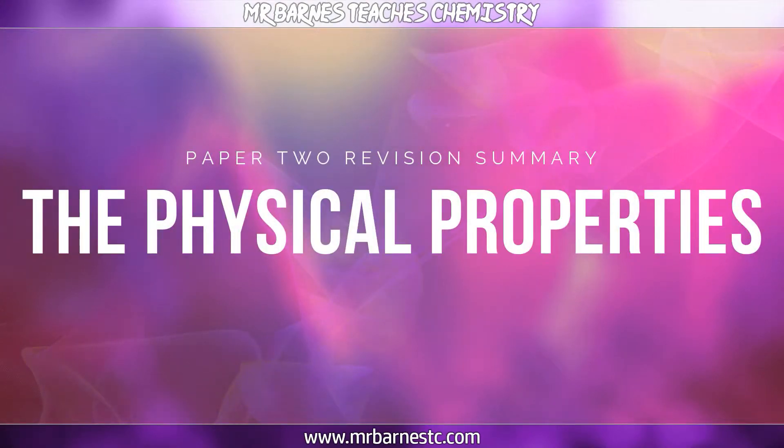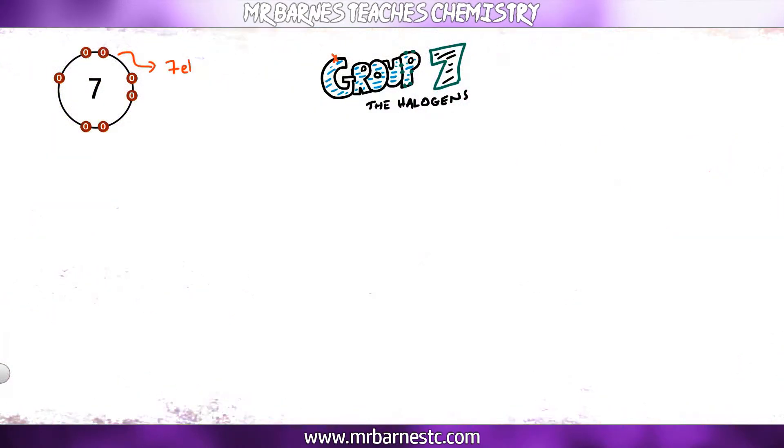The second section of this video is going to have a look at the halogens. Again they're in Group 7 so they have seven electrons in the outer shell. Again they have the same chemical reactions so they react the same way.